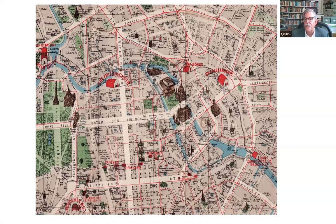Döblin was born in Stettin, where his father had a textile store. But when he was 10 years old, his father ran off with one of the employees to the United States, so his mother was stranded with five kids. She moved to Berlin where two of her brothers were, and they lived in this working-class area. After Döblin completed his medical studies and training in other parts of Germany, he returned here as well. Throughout the 1920s, Döblin was actually a practicing medical doctor with a working-class clientele just off the right side of this map.